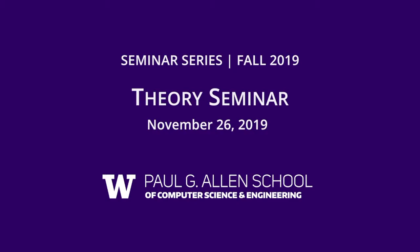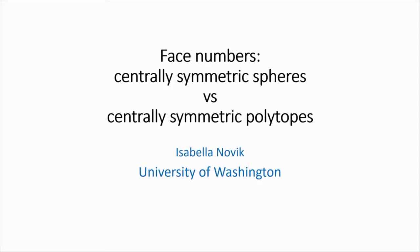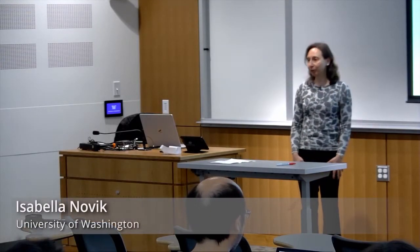Welcome to the theory seminar. It's a great pleasure to have Isabella Novick, who's a professor in the math department. She's going to tell us about face numbers, centrally symmetric spheres versus centrally symmetric polytopes. So as you see already in the title, I have the word CS twice, because that's going to be my abbreviation for those things. What I'm going to try to do is tell you the story of this subject, and as you will see, it's quite mysterious. There are still plenty of open problems.